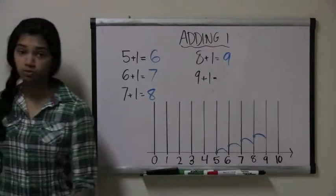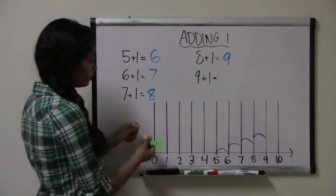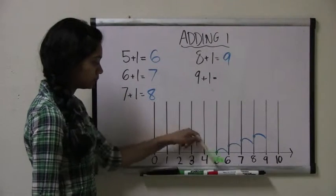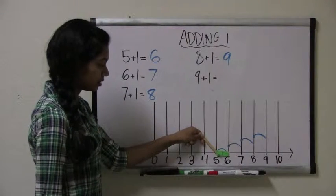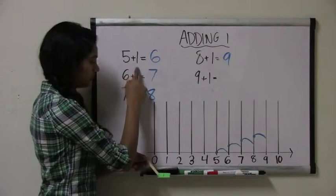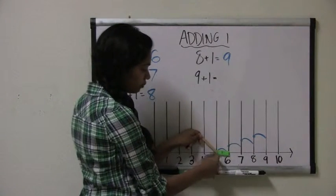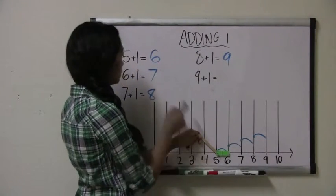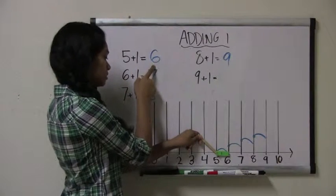Let's start looking at this one more way. This green bar shows that we're trying to add 1 because we're jumping one spot, and this is the length of one spot. So let's start with 5 plus 1. We start with the number 5, we jump one spot, and we get to the number 6. So 5 plus 1 equals 6.